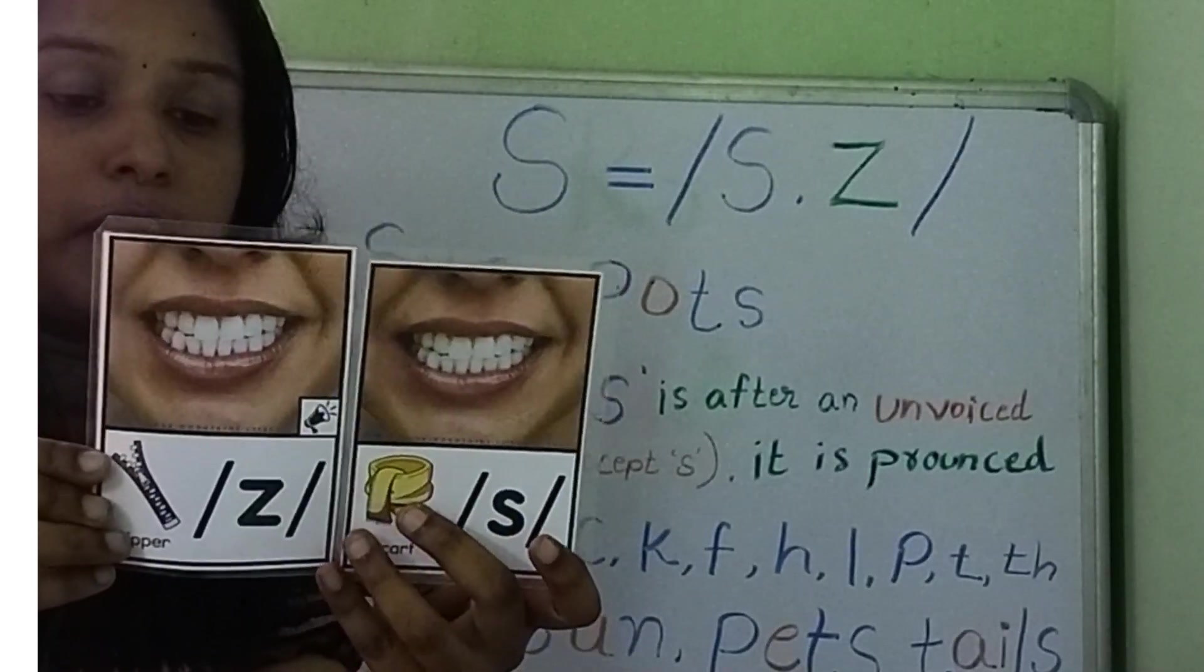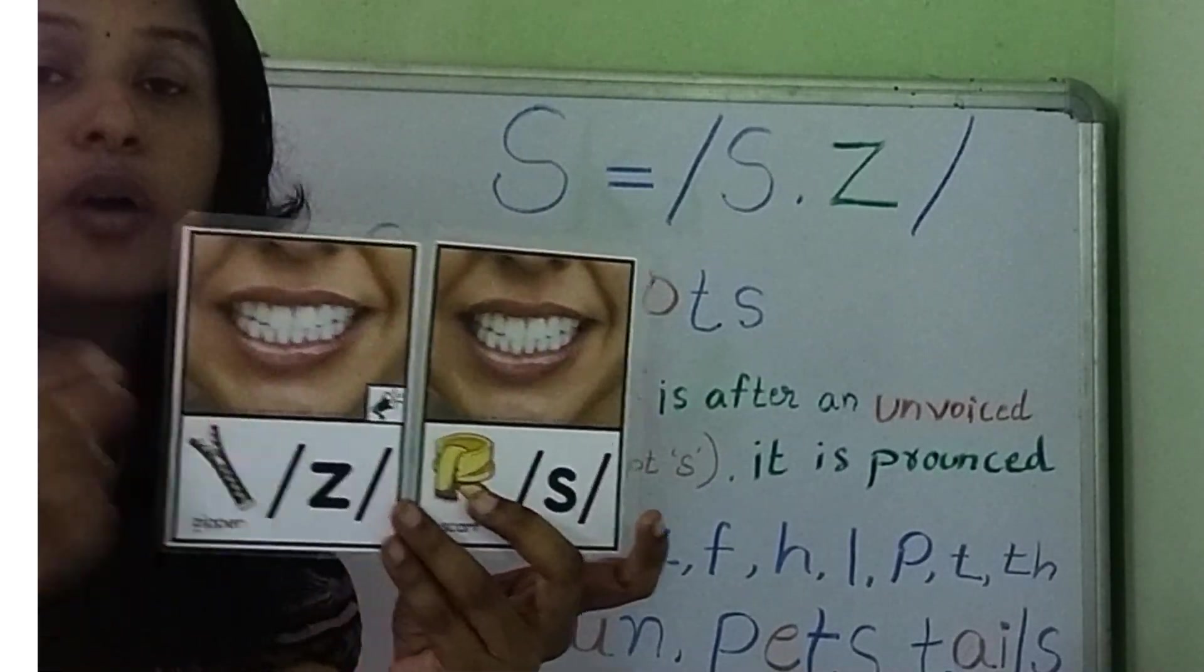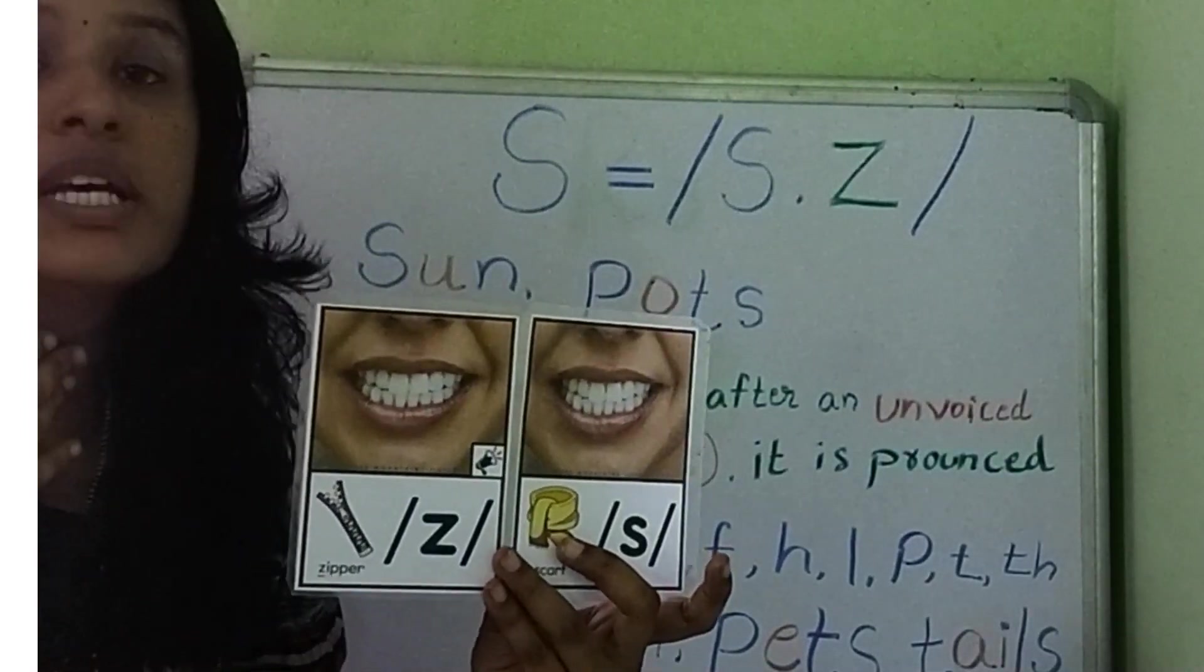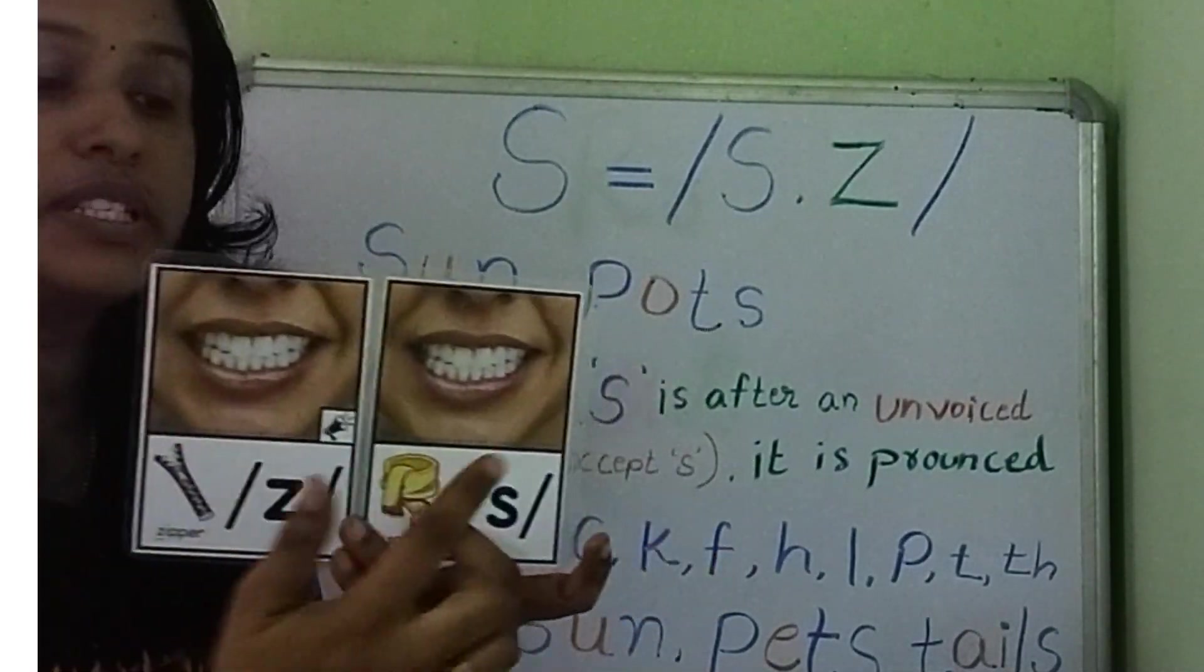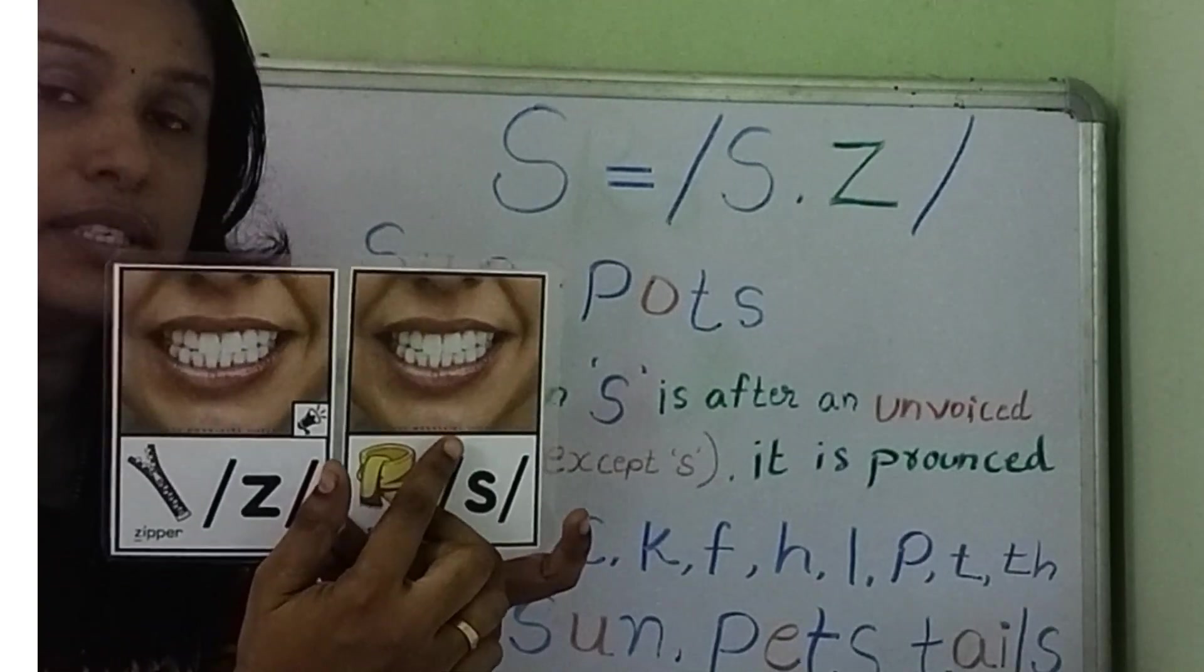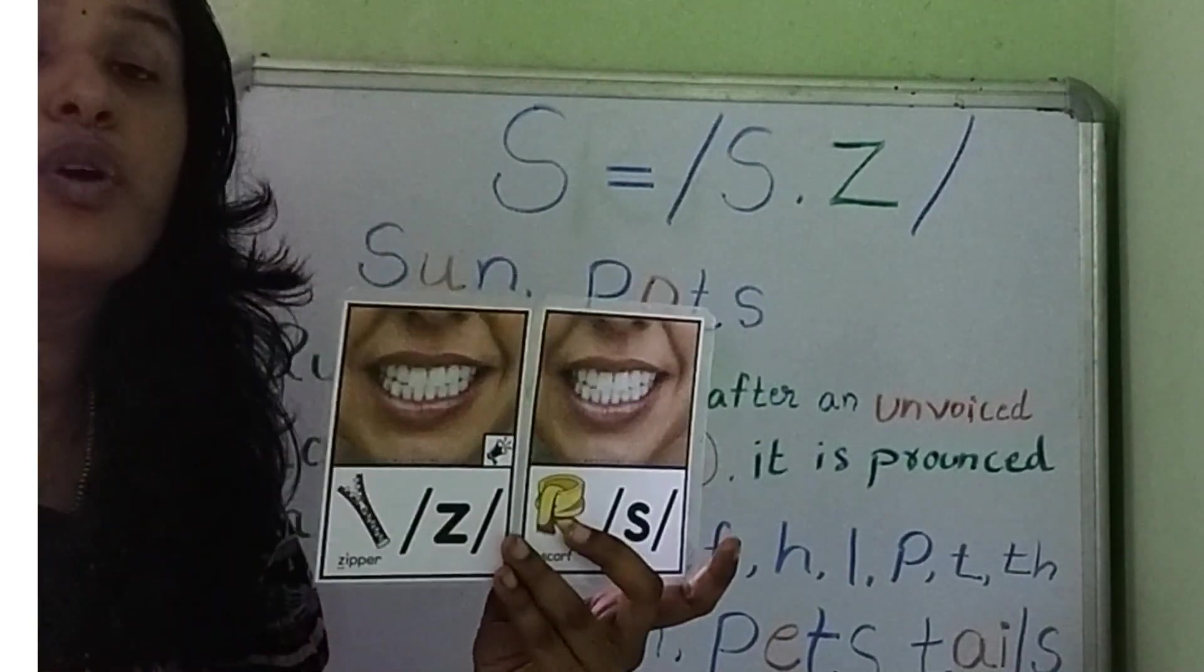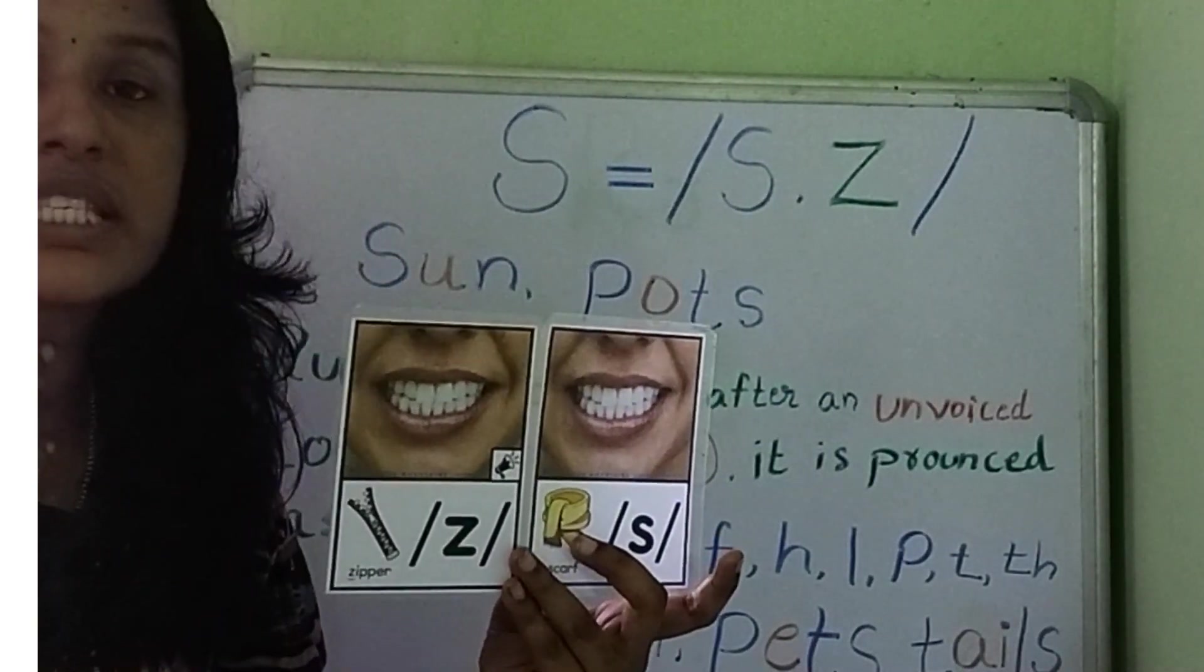How can we identify this? When we say the Z sound, we are using our voice box. Z. When we say the first sound of S, we don't use our voice box. S.